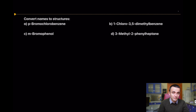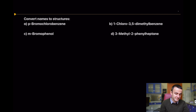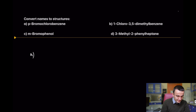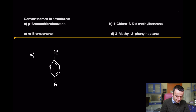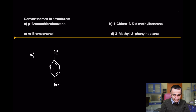Let's convert names to structures. The first one: para-bromochlorobenzene. The parent name is benzene. Place chlorine here; at the para position you place bromine. That is compound A.